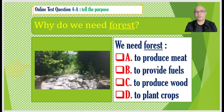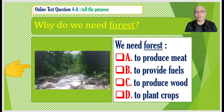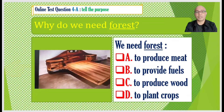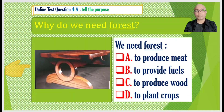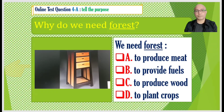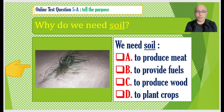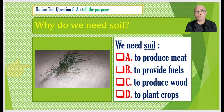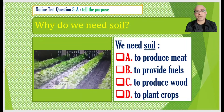Practice test number four: Why do we need forest? We need forest — A to produce meat, B to provide fuels, C to use wood, D to plant crops. Practice test number five: Why do we need soil? We need soil — A to produce meat, B to provide fuels, C to produce wood, D to plant crops.